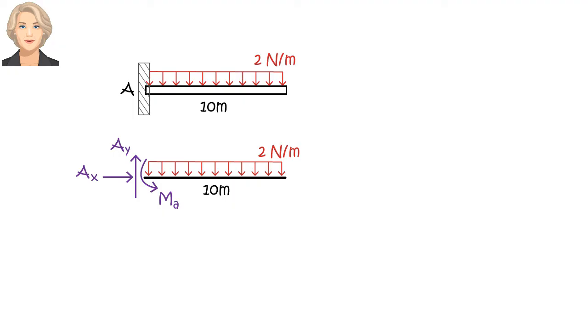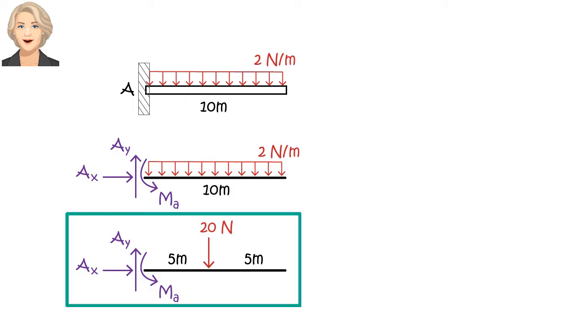We then replace the uniformly distributed load with its equivalent concentrated load. So now, our free body diagram looks like this.